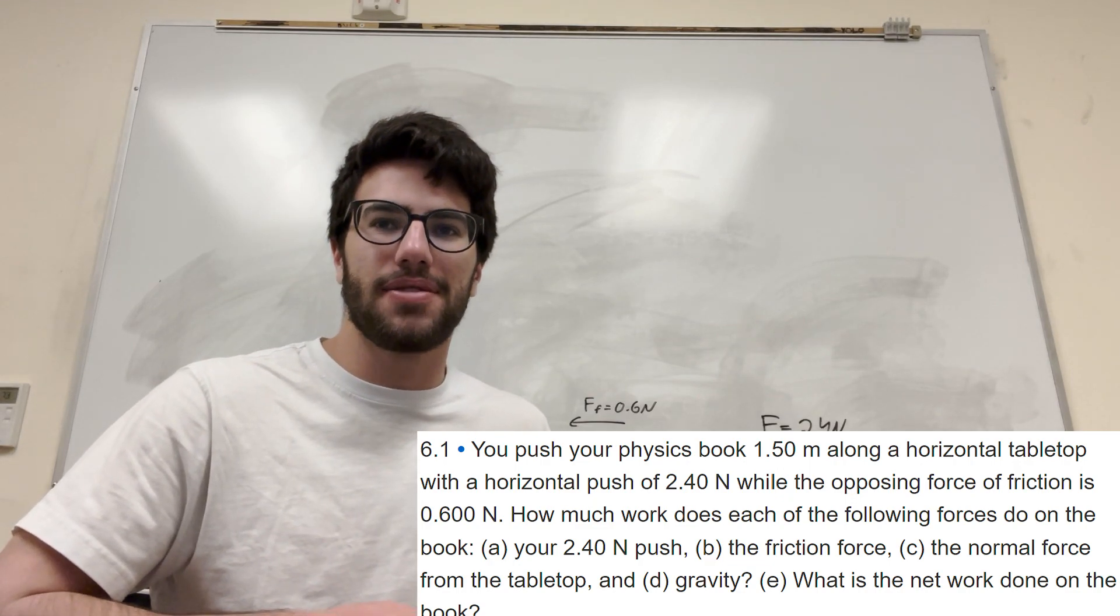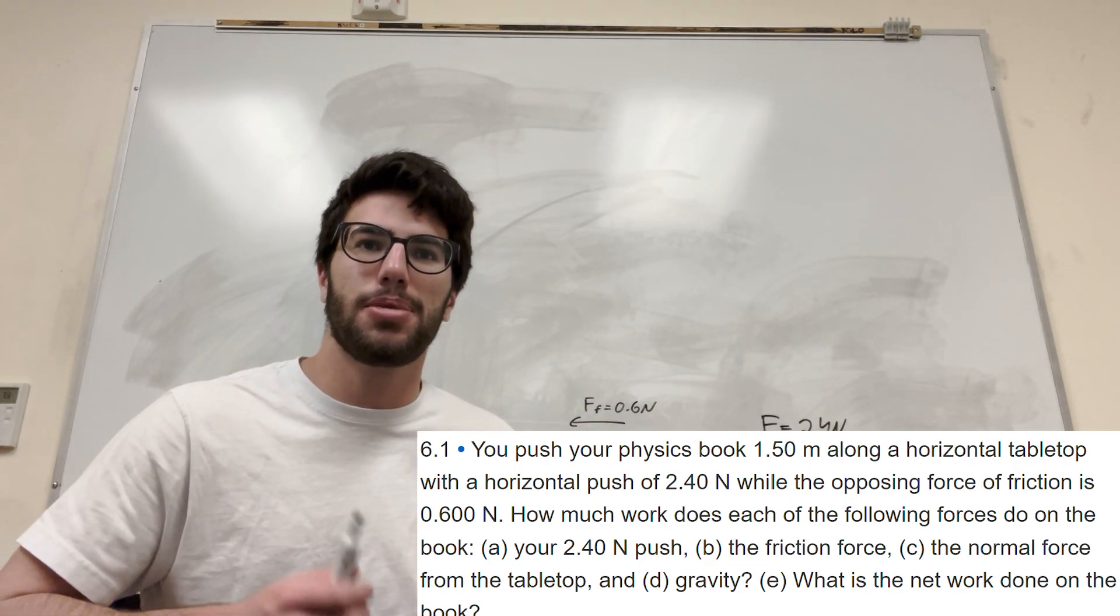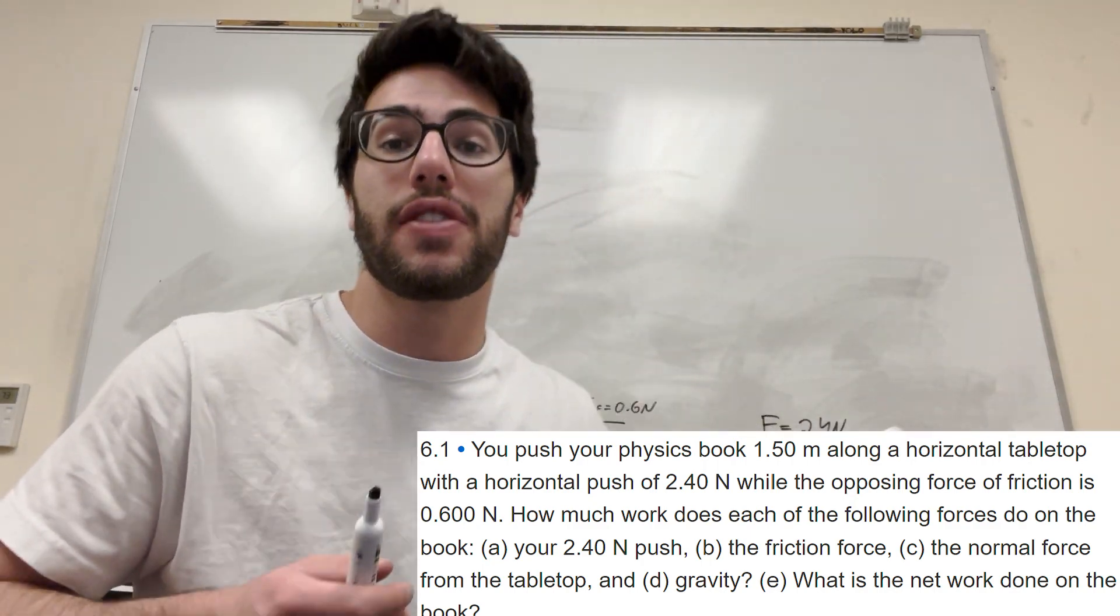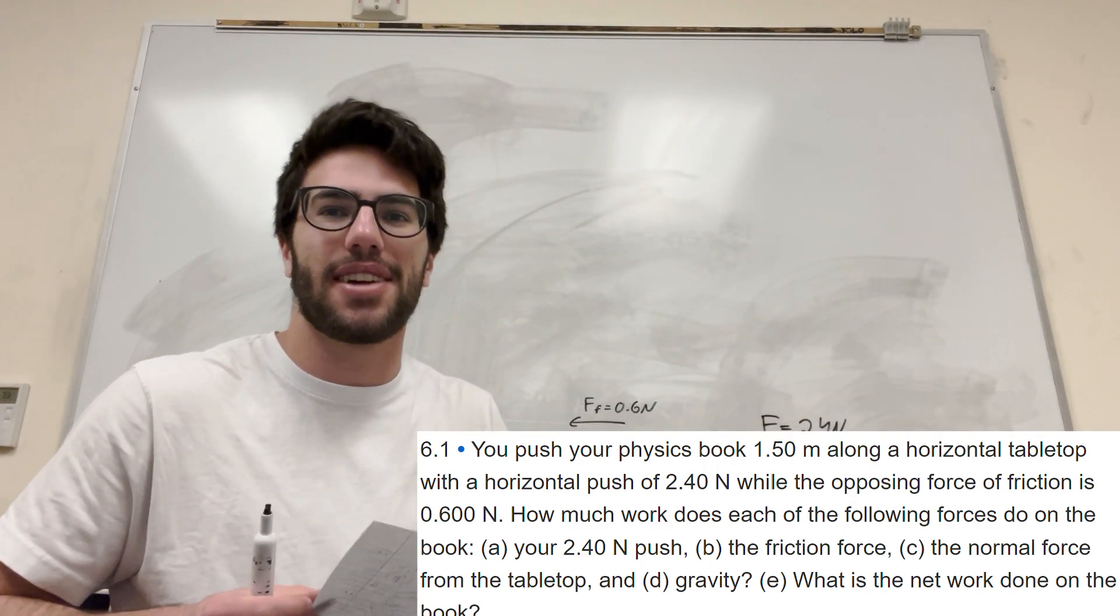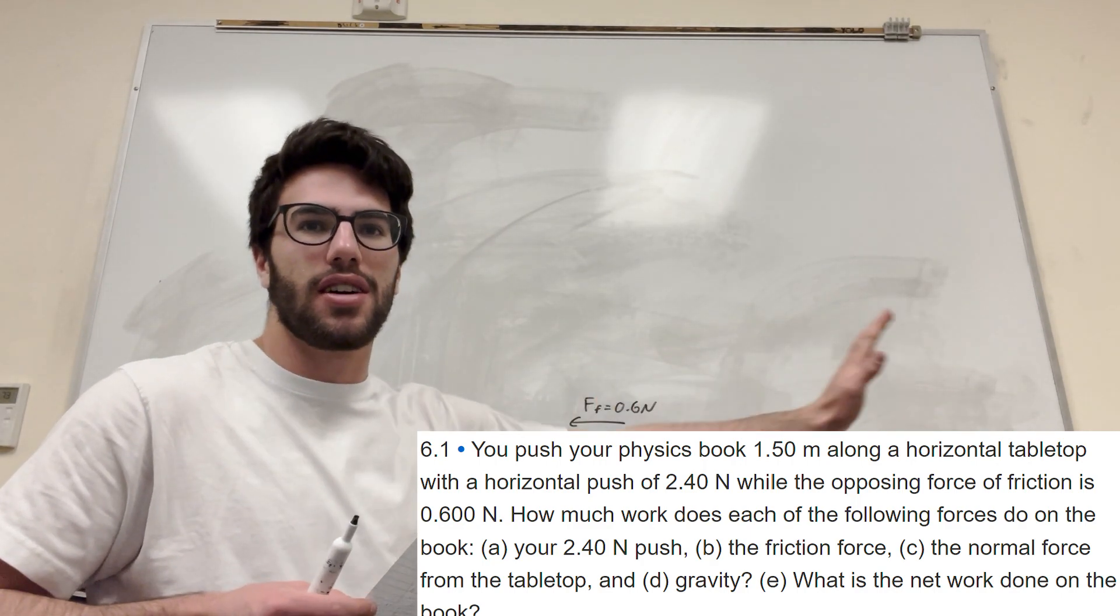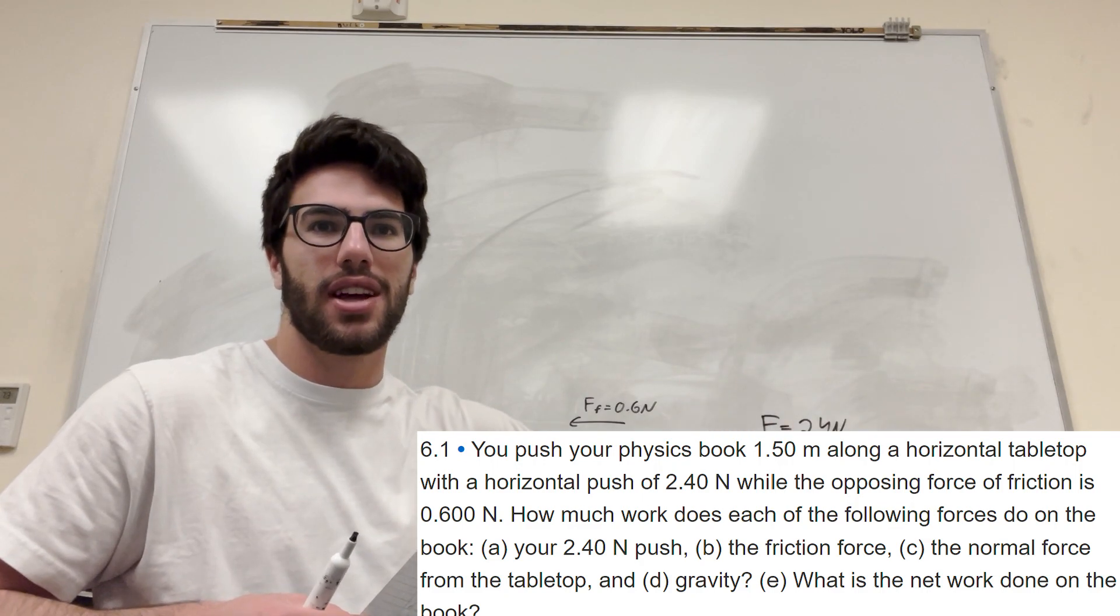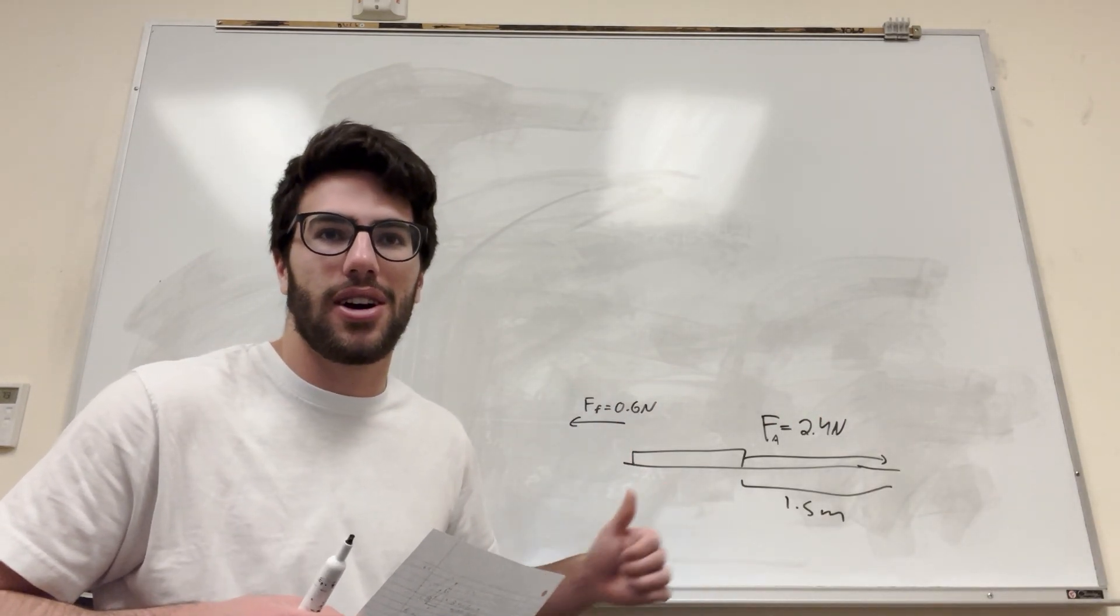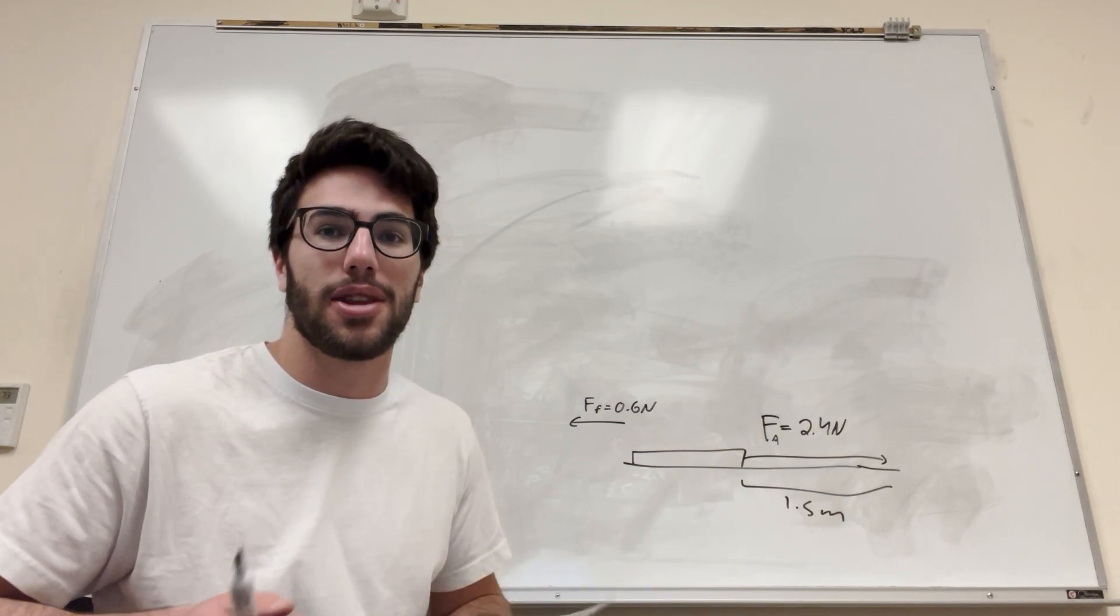What's up Cal gang? Alright, so we got some physics problems here. It says you push a physics book 1.5 meters across a table. You know a physics book is a lot of weight, so that's going to be a lot of force. So it says you do 2.4 newtons of force pushing it this way, and the friction force is 0.6 newtons. And it wants us to know how much work does each of the following do on the book.